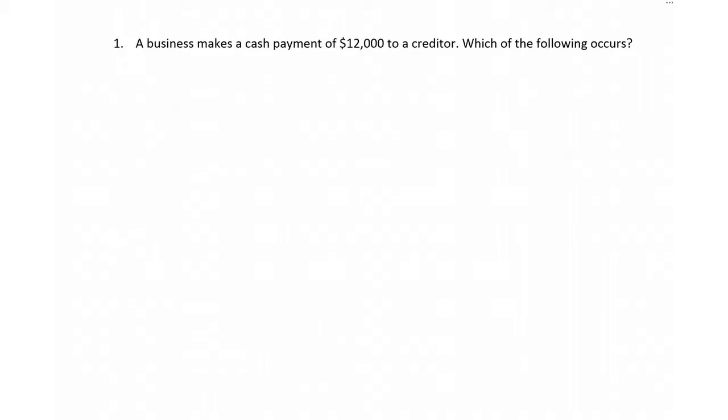When I see a problem like this, I just like to write out the journal entry. So if we're going to make a cash payment, that's going to be a credit to cash, and since it's to a creditor, that's going to be a debit to accounts payable and a credit to cash for $12,000.